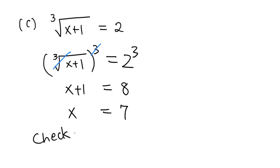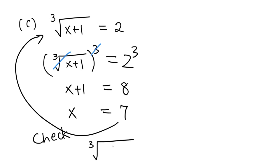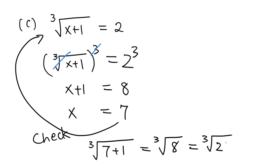Let's check the solution. If you plug x = 7 back into the original equation, we have cube root of 7 plus 1, which is cube root of 8. That is cube root of 2 cubed, so this equals 2. The left-hand side equals the right-hand side, so x = 7 really is the solution.